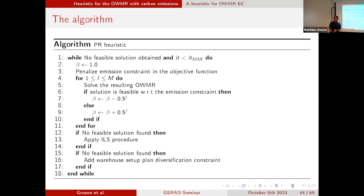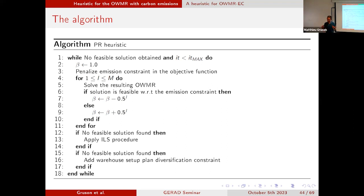We developed an iterative local search mechanism to handle potential infeasibility. The heuristic is as follows: we penalize the emission constraint and solve the one warehouse multi-retailer problem. If our solution is feasible regarding the emission constraint, we can reduce the value of beta to put more emphasis on cost. If it's infeasible, we apply the iterative local search mechanism, and if still infeasible, we go to a diversification mechanism changing the warehouse setup plan. We do these iterations until we finally have a feasible solution and record the one with the best cost.